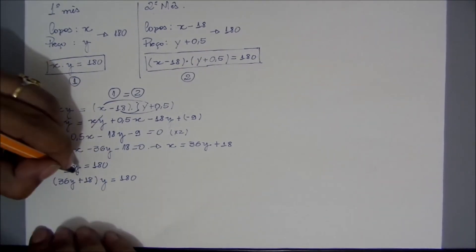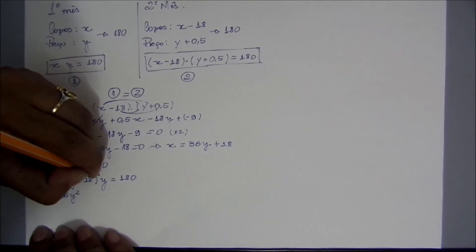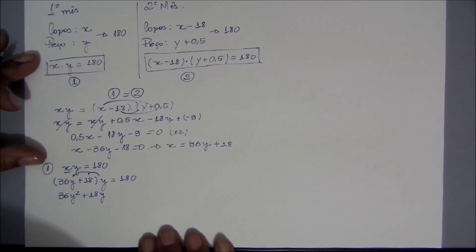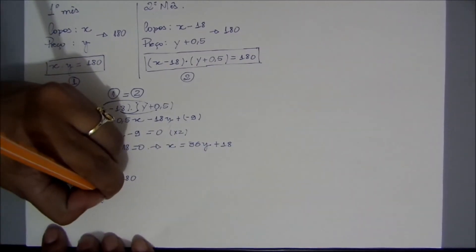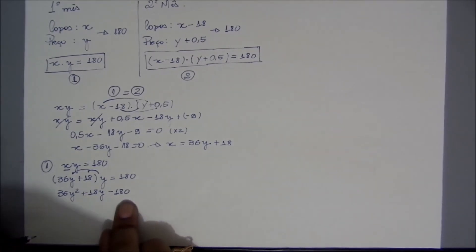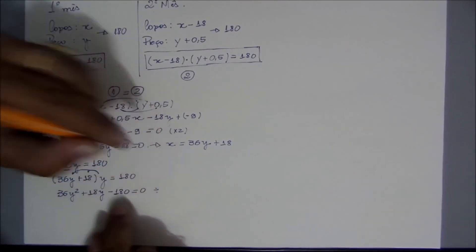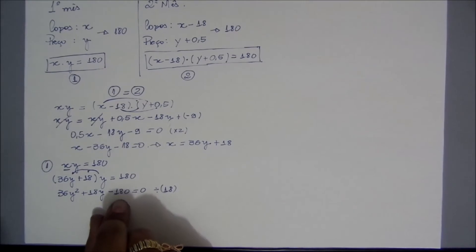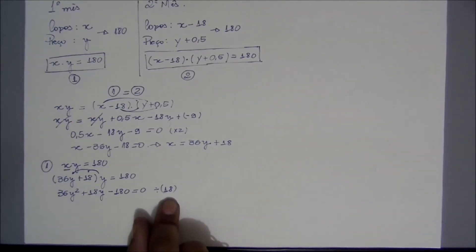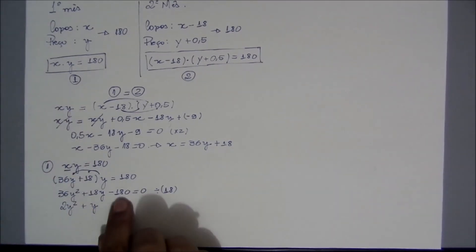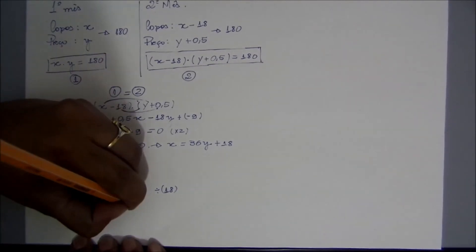Fazendo a distributiva de novo: Y vezes 36 dá 36Y ao quadrado; Y vezes 18 dá 18Y. Como estamos estudando esse conteúdo, dá para perceber claramente que já vai aparecer uma função de segundo grau. Então, vou passar o 180 para o outro lado — está positivo, vem negativo. Vou dividir os três membros da minha função por 18, só para simplificar, já que a prova não tem calculadora. 36 dividido por 18 dá 2Y²; 18 dividido por 18 dá Y; 180 dividido por 18 dá 10.